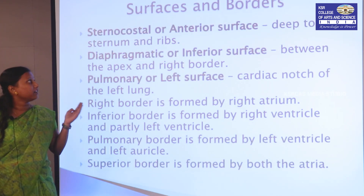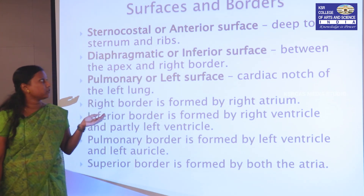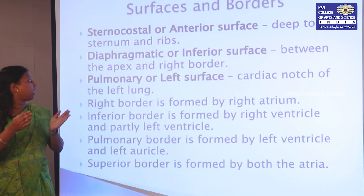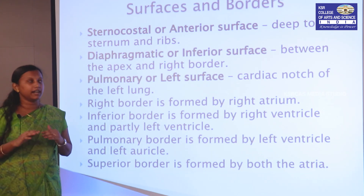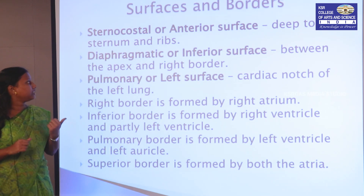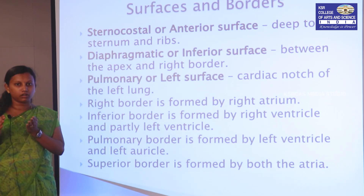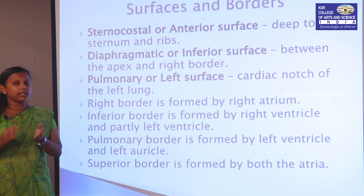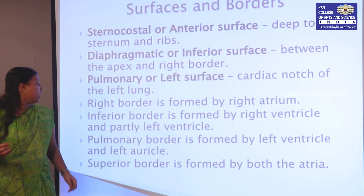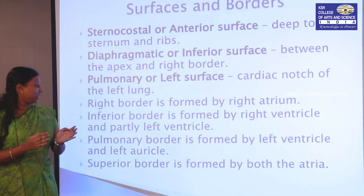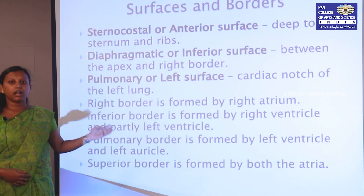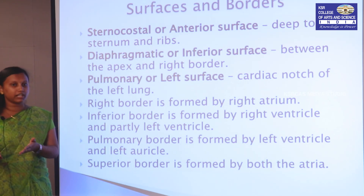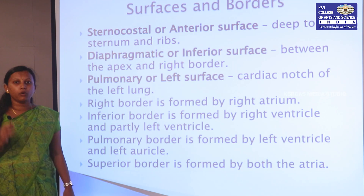The surfaces of the heart include the sternocostal or anterior surface, which is attached to the sternum and ribs. The diaphragmatic or inferior surface lies between the apex and right border. The pulmonary or left surface is present at the cardiac notch of the lung border. The right border is formed by the right atrium, the inferior border by the right ventricle and partly by the left ventricle. The pulmonary border is formed by the left ventricle and left auricle, and the superior border by the aorta.